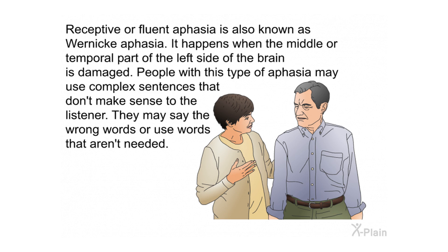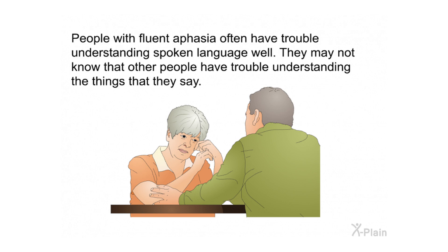Receptive or fluent aphasia is also known as Wernicke's aphasia. It happens when the middle or temporal part of the left side of the brain is damaged. People with this type of aphasia may use complex sentences that don't make sense to the listener. They may say the wrong words or use words that aren't needed.